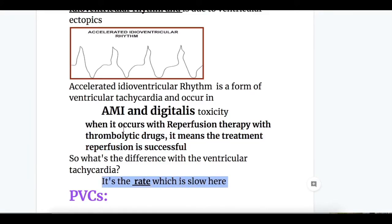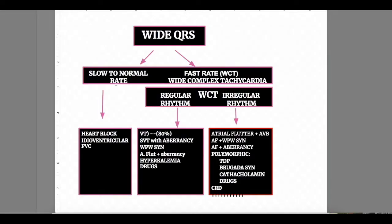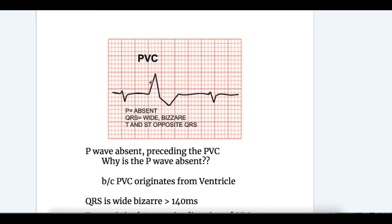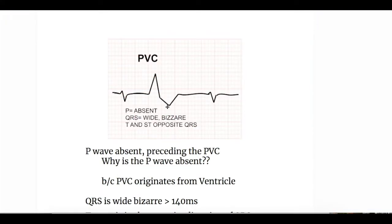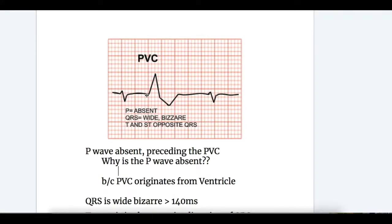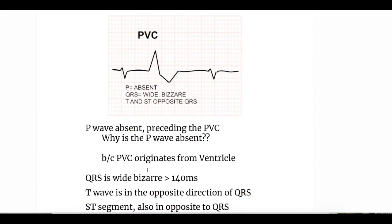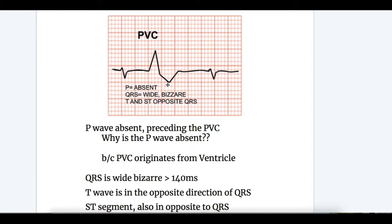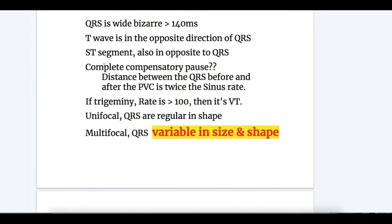Next is premature ventricular contraction (PVC). PVC shows wide bizarre QRS complexes with absent P wave preceding the PVC, because the PVC originates from the ventricle. QRS is more than 140 milliseconds, the T wave is in the opposite direction to the QRS, and the ST segment is also opposite to the QRS. There is a complete compensatory pause — the distance between the QRS before and after the PVC is twice the sinus rate.